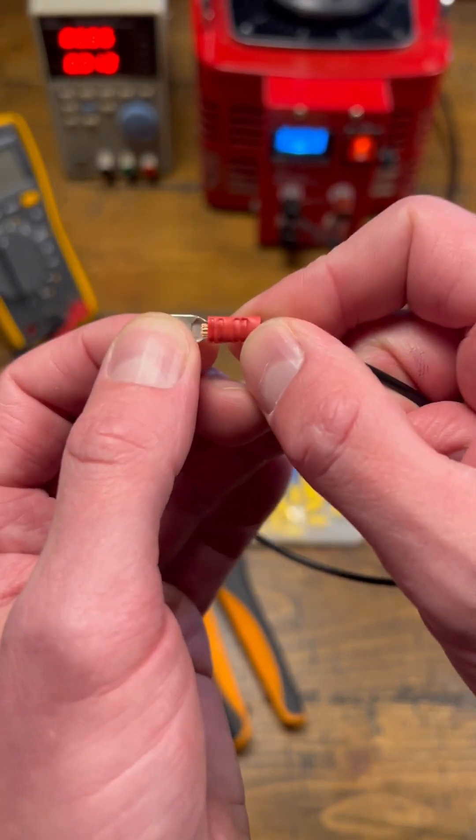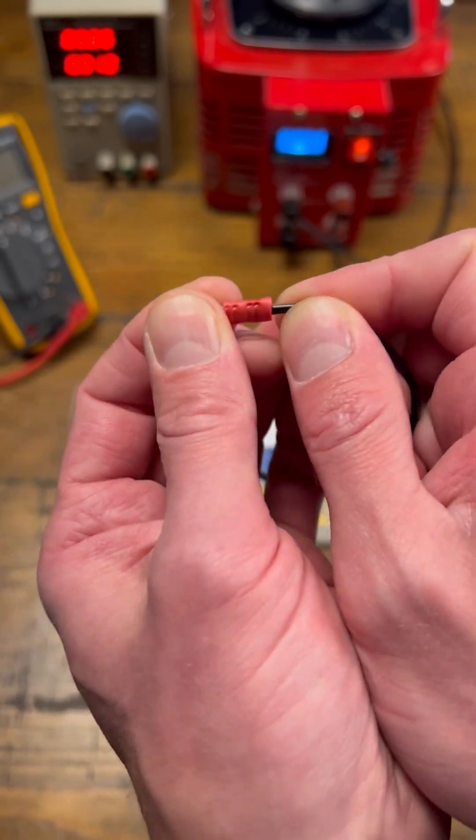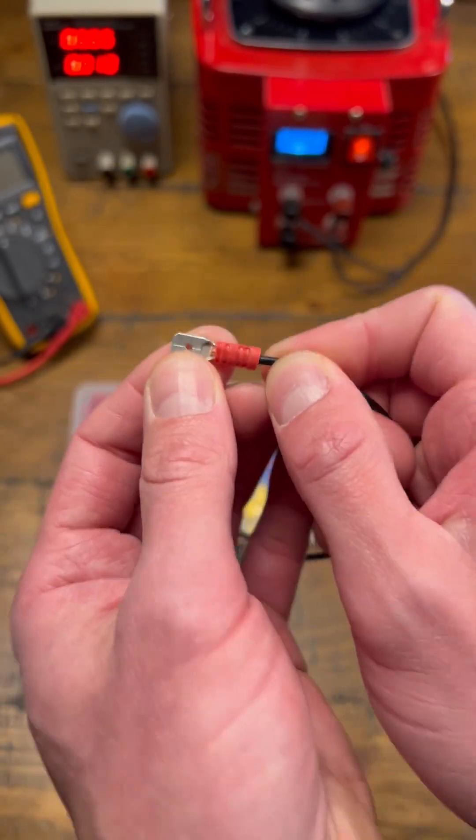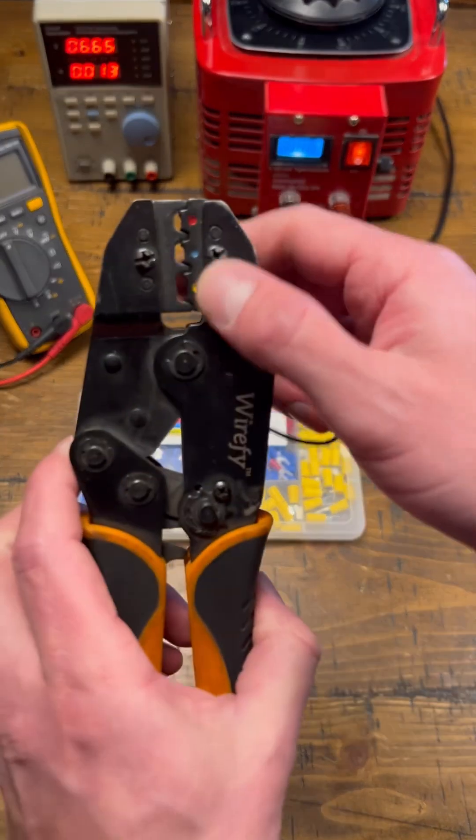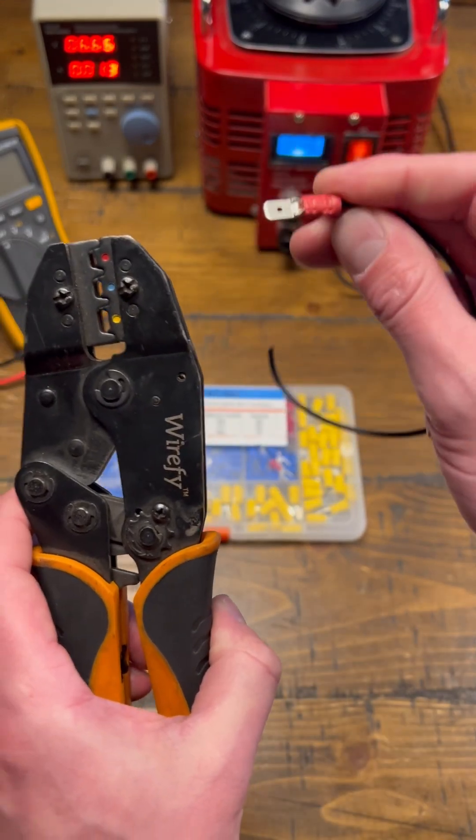All right, and then as far as your crimps go, after a good crimp I always want to see a bit of electrical conductor coming through. I'll always give it a good pull to make sure it's a good solid electrical connection. And then on your crimpers, always make sure you're following the color code to the color of your crimp.